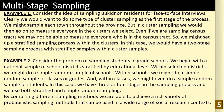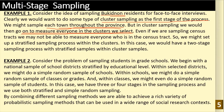For the first example, consider the idea of sampling residents for face-to-face interviews. Clearly, we want to do some type of cluster sampling as the first stage of the process. You can use cluster sampling first because you can sample each town throughout the province if you choose the clusters. Notice that in cluster sampling, we would then go to measure everyone in the clusters we select. Even if we are sampling census tracts, we may not be able to measure everyone who is in the census tracts.